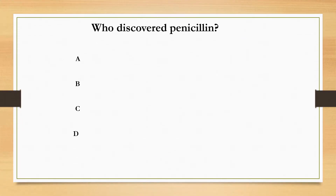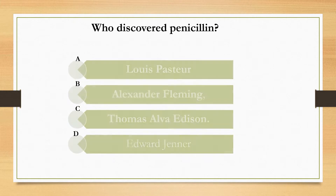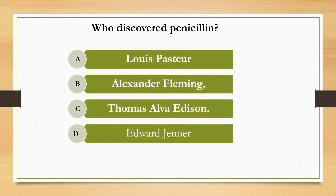Who discovered penicillin? There are four options. A. Louis Pasteur. B. Alexander Fleming. C. Thomas Alva Edison. D. Edward Jenner.